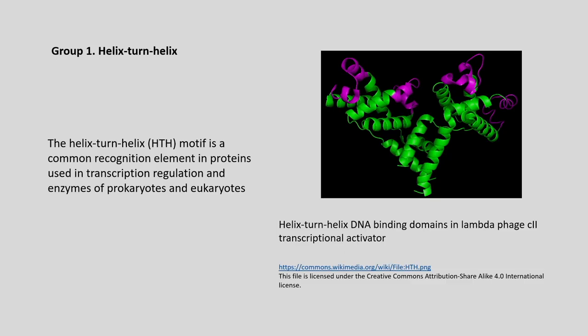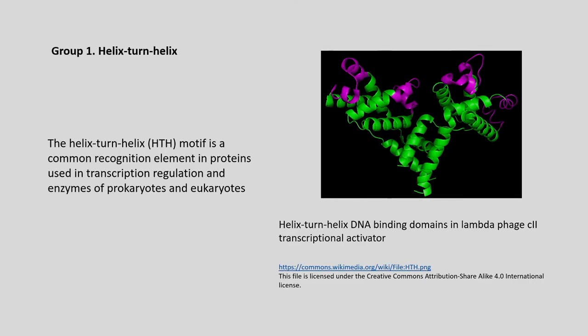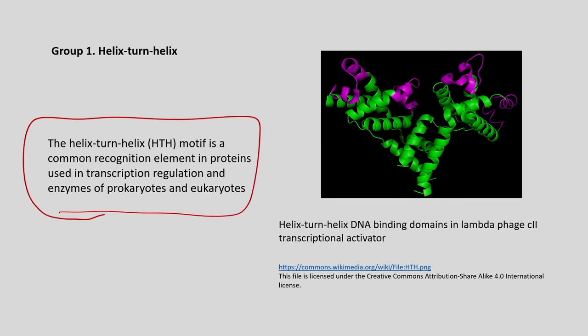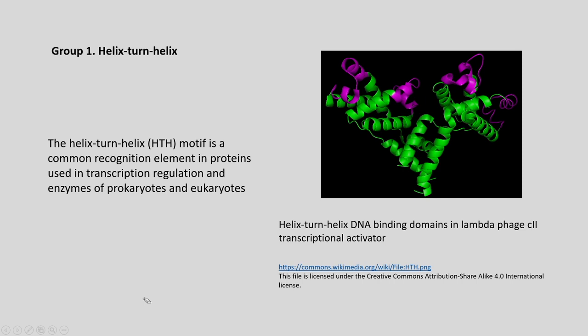The helix-turn-helix motif is a common recognition element in proteins used in transcription regulation and enzymes of both prokaryotes and eukaryotes. Here you can see the multiple alpha helices that make up this structure. This is illustrated by the helix-turn-helix DNA binding domains in the lambda phage CII transcriptional activator.